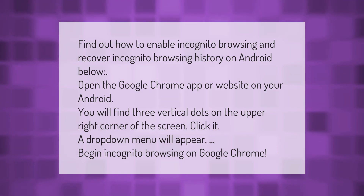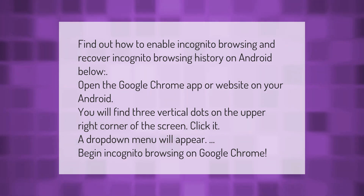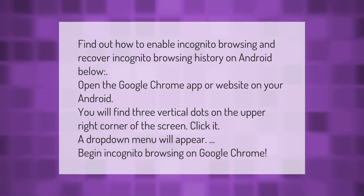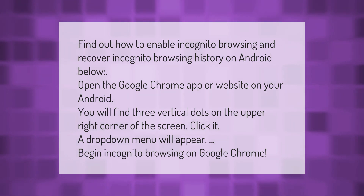Find out how to enable incognito browsing and recover incognito browsing history on Android. Open the Google Chrome app or website on your Android. You will find three vertical dots on the upper right corner of the screen — click it.